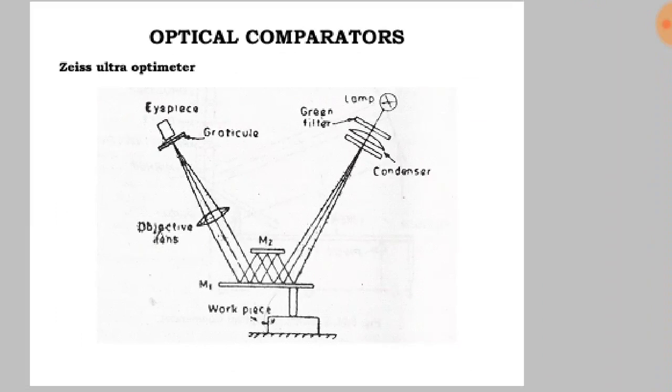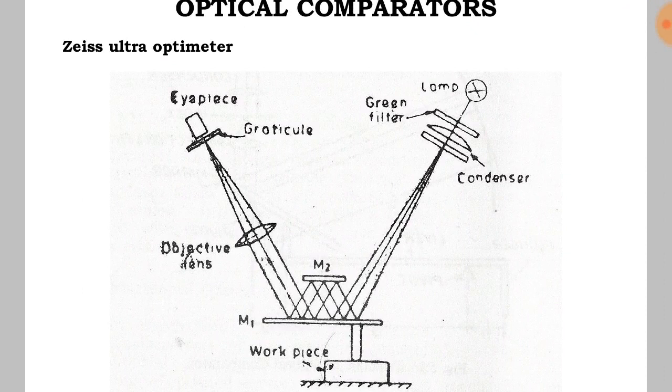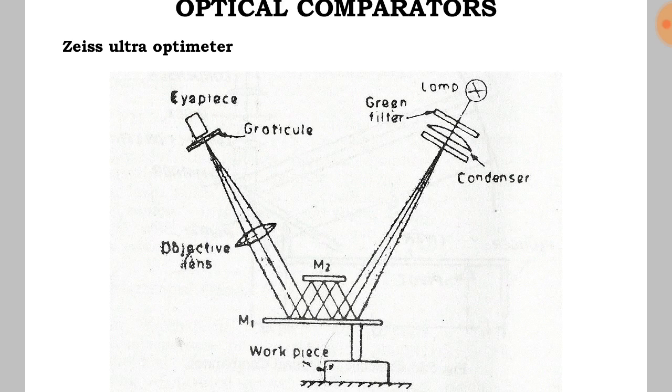The projected image of an index line on the graticule can be adjusted by means of a screw in order to set the zero. When correctly adjusted, the image of the index line is seen against that of the graticule.